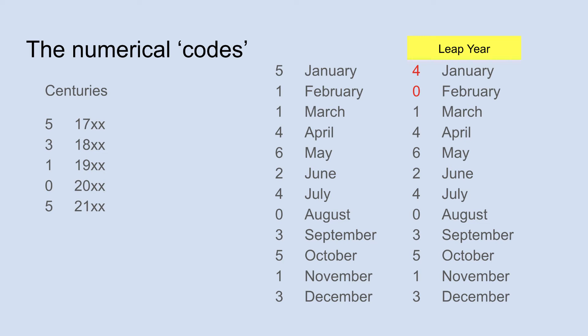So what are the codes you have to memorize? For the centuries: the 1700s have code 5, the 1800s have 3, the 1900s have 1, the 2000s have 0 — which is convenient. Then it starts over again, with the 2100s being 5, the 2200s being 3, and so on.